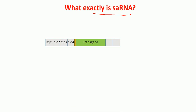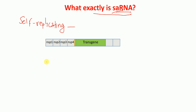Hello everyone. In this lecture today I'm going to talk to you about what is self-amplifying or self-replicating RNA. As the name suggests, self-replicating means that this RNA replicates on its own. First I'm going to talk to you about two kinds of RNA: self-replicating RNA, also called self-amplifying RNA, and messenger RNA.